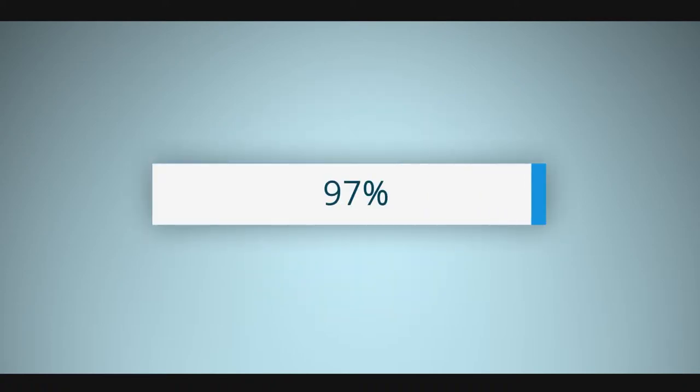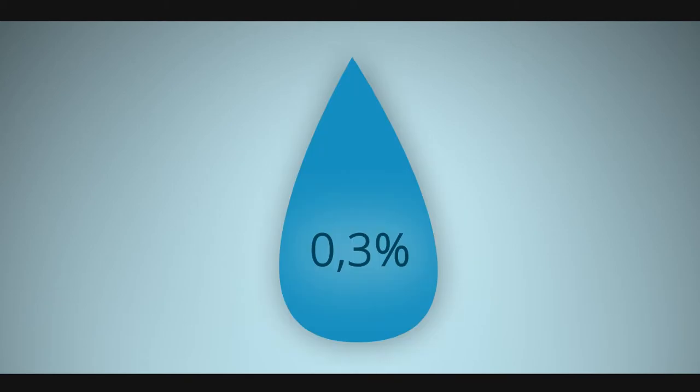The majority of the Earth's surface is covered by water. 97% of it is salt water from the oceans. 3% is fresh water found on glaciers, in lakes and in groundwaters. Only 0.3% of the world's water resources are available as drinking water.